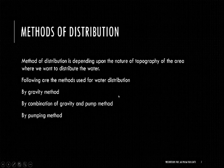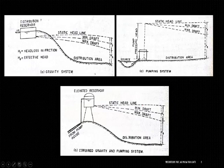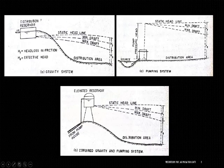Either it will be by gravity method, by pumping method, or by combination of gravity as well as pumping. So methods of distribution basically depend on the topography. These methods include gravity method, combination of gravity and pumps, and the pumping method. Now for the gravity method, the distribution reservoir is at the top — at the elevated area — and the area where you want to distribute is at the lower most area.